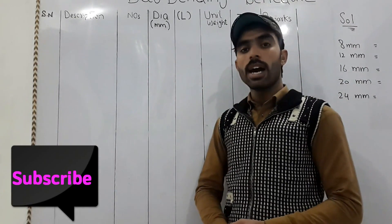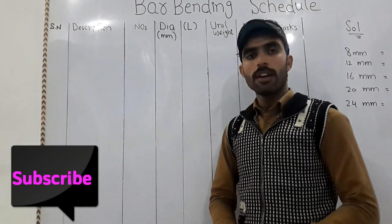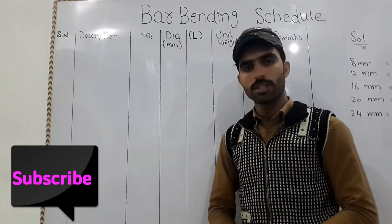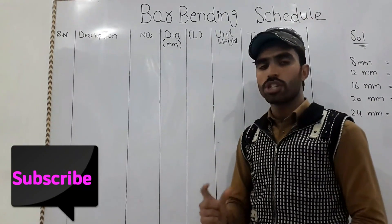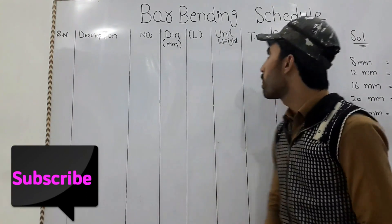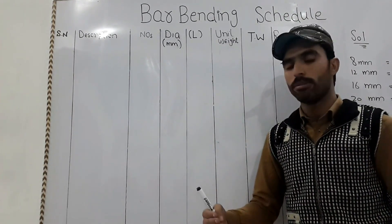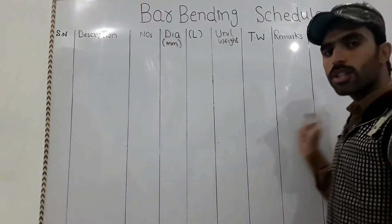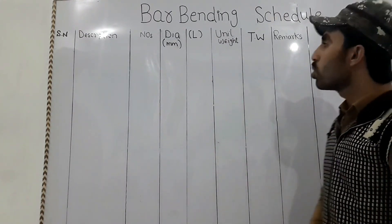Another column is number — how many numbers of elements do you have. Then there is diameter in millimeters. Next is length — the length of the steel or the object you are making the calculation for. Then there is unit weight — the unit weight of steel per meter for any diameter.